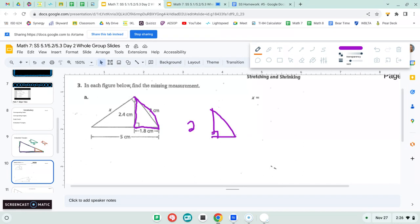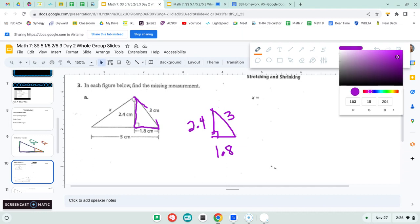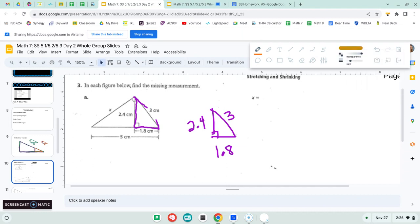So I have 2.4 and 1.8. And I believe that's three. And then I'm going to use the big triangle. So this one here. So I'm going to redraw that.